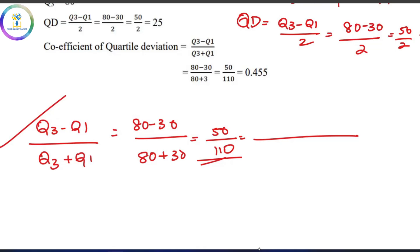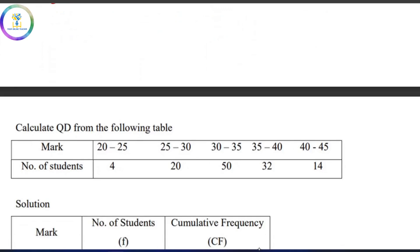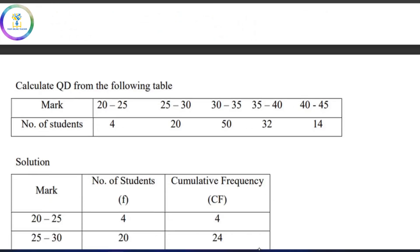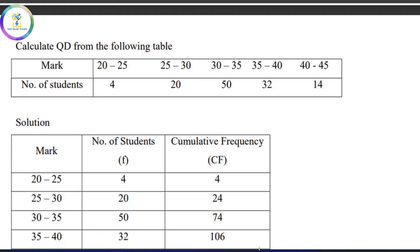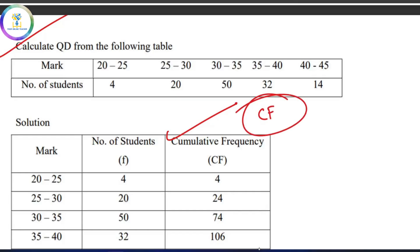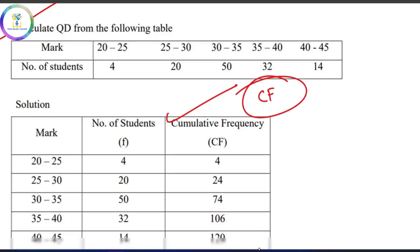The next problem is the quartile deviation for a continuous series. We have classes like 20 to 25 and 25 to 30. In a continuous series, we have an extra column called Cf — the cumulative frequency — which is very simple to calculate.